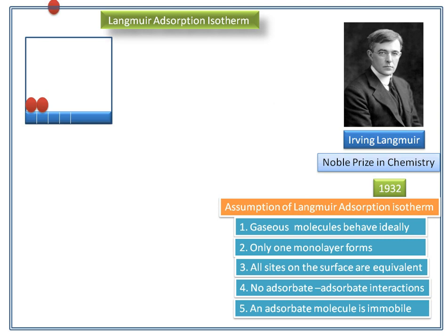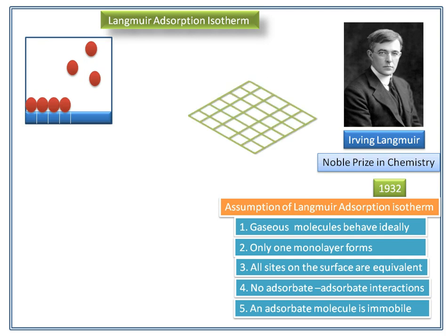We can see how gas molecules are adsorbed on equivalent sites of the metal surface. Every adsorption site is equivalent, and the ability of a gas molecule to bind is independent of whether or not neighboring sites are occupied. The schematic diagram shows equivalent sites on the metal surface represented by red colored loops, and vacant sites are also visible, represented by blue dots.